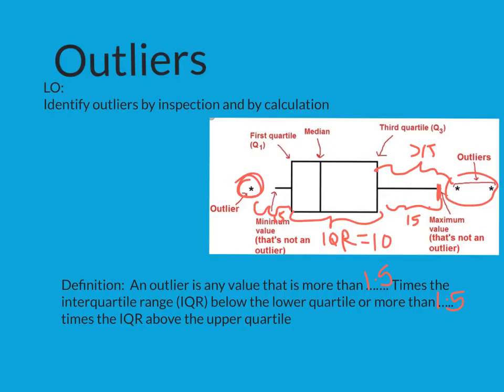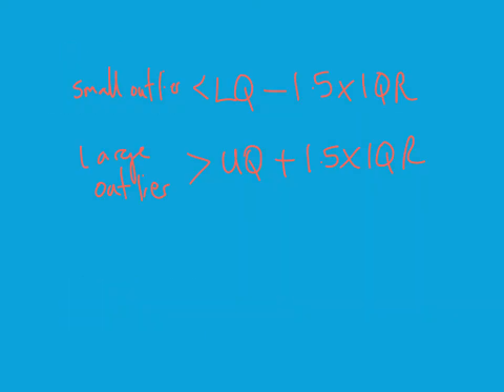This makes a bit more sense if we do an example, but first let's make sure we write down the formula. So there's our formulae: it's 1.5 times the interquartile range taken away from the lower quartile, that's your small outlier, and then you've got your large outlier. As I've said, we'll do an example, it'll make a bit more sense.